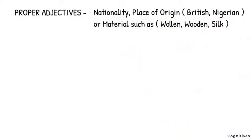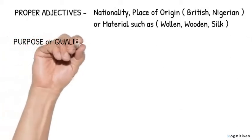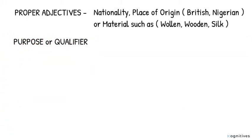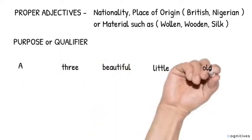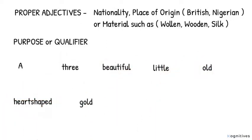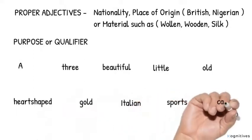And then eight: Purpose or qualifier. Now let's consider some examples to help us understand order of adjectives. Number one: A three beautiful little old heart-shaped gold Italian sports car.